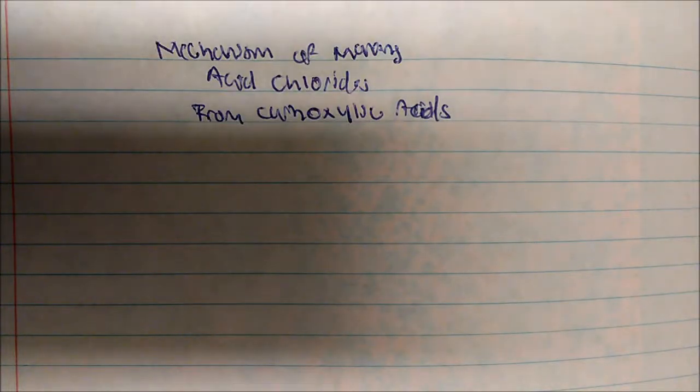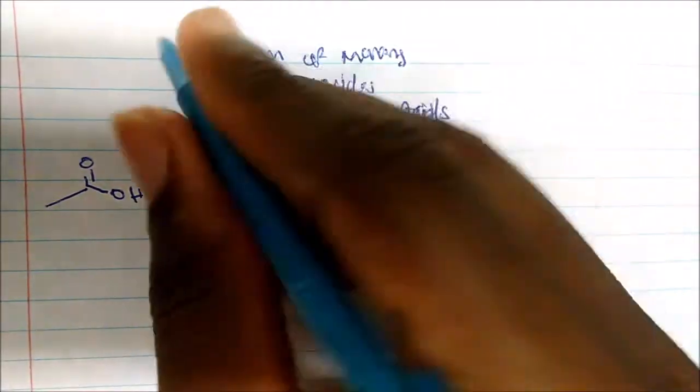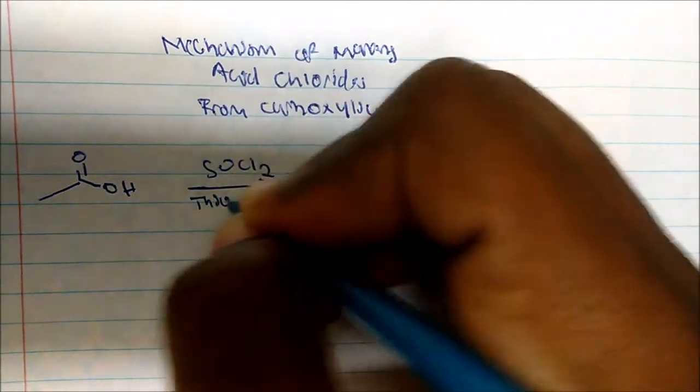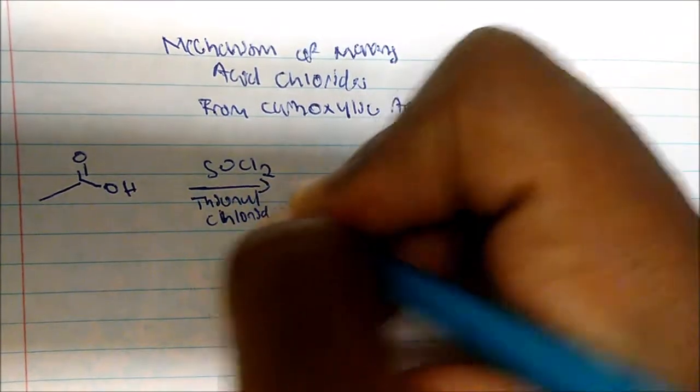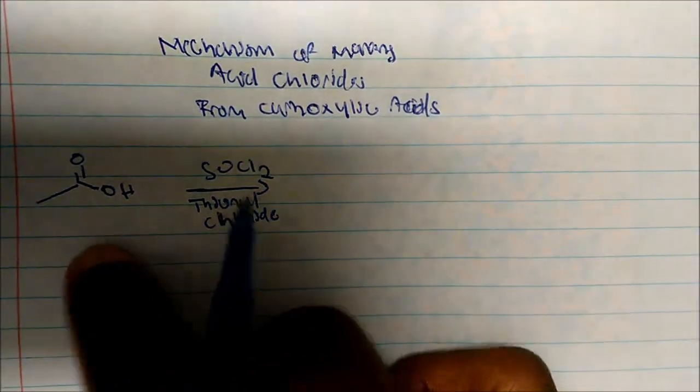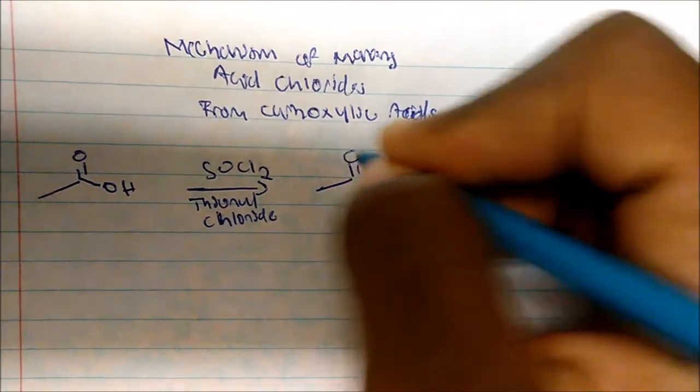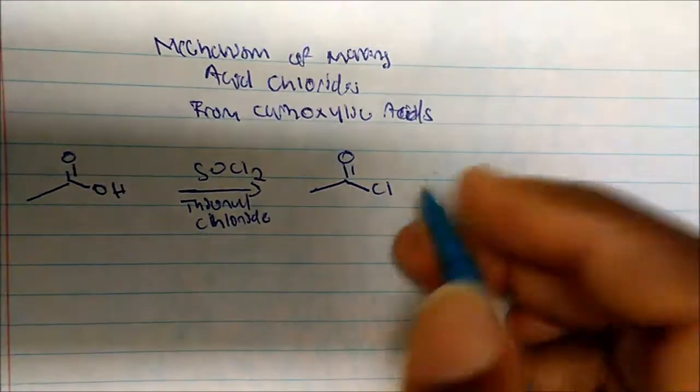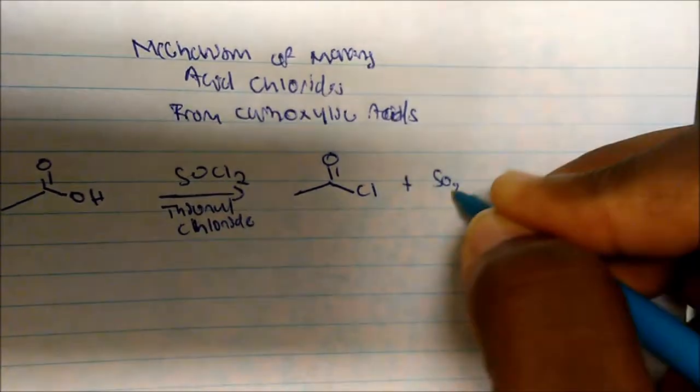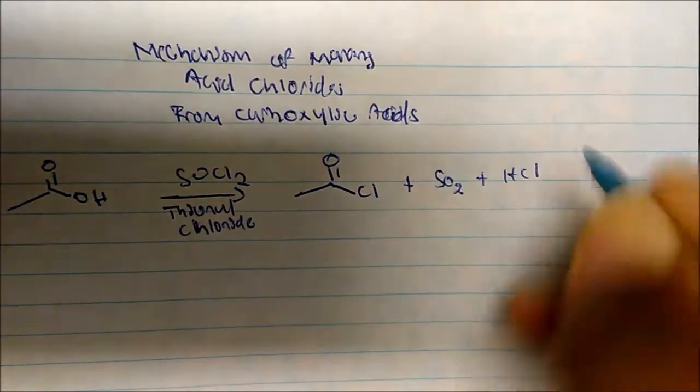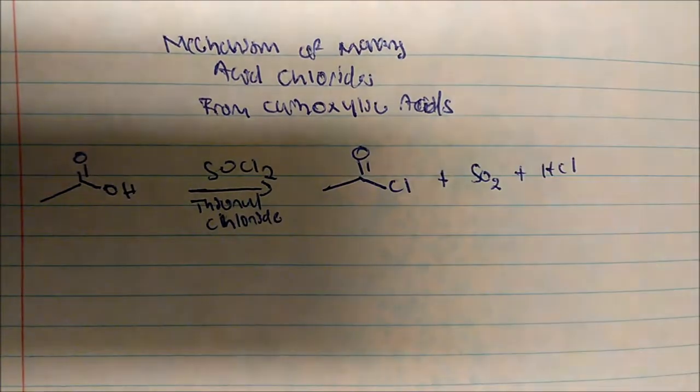So in this video, let's talk about the mechanism of making acid chloride from carboxylic acids. If I take something such as acetic acid, this is a simple carboxylic acid and I add this compound, I add SOCl2. This is actually called thionyl chloride. If I take carboxylic acid and I add thionyl chloride, I'll actually get the acid chloride. So I'll get the acid chloride plus SO2 plus HCl. So these are the three products that I will get.